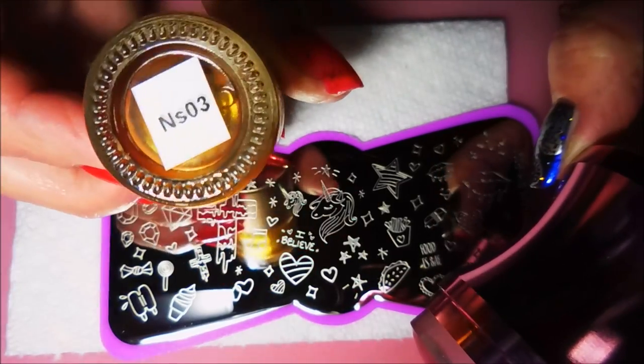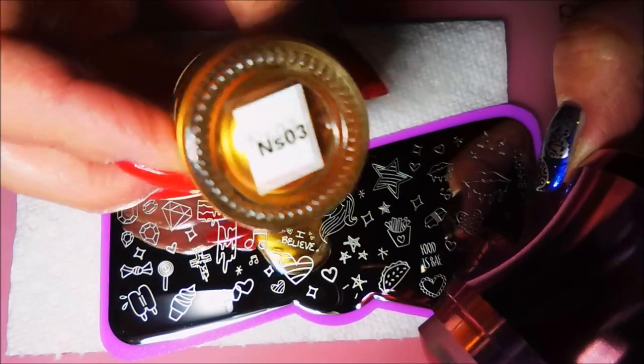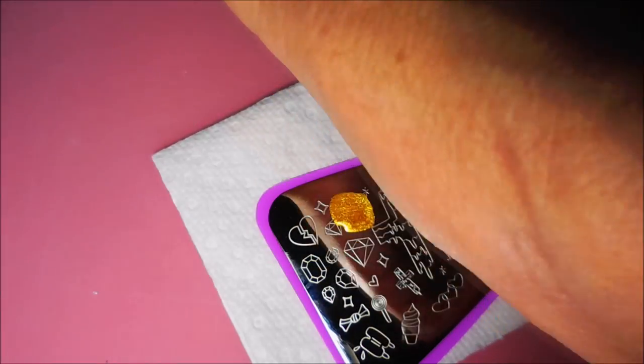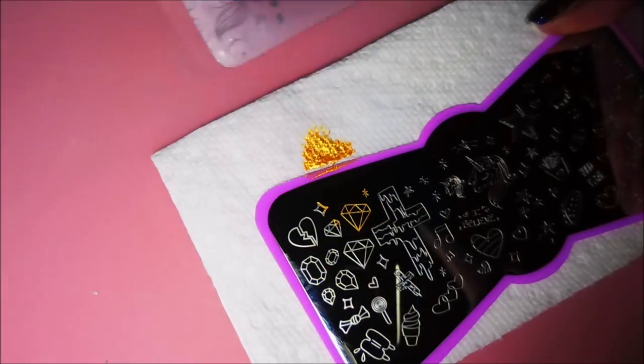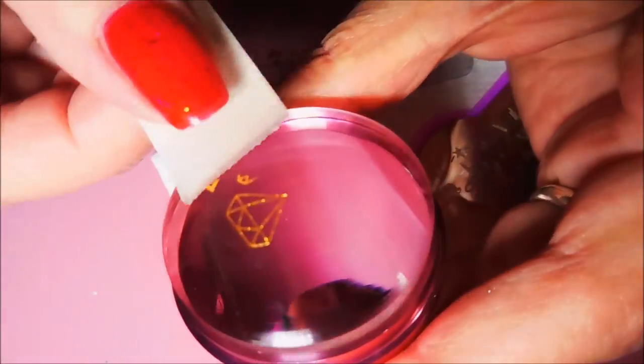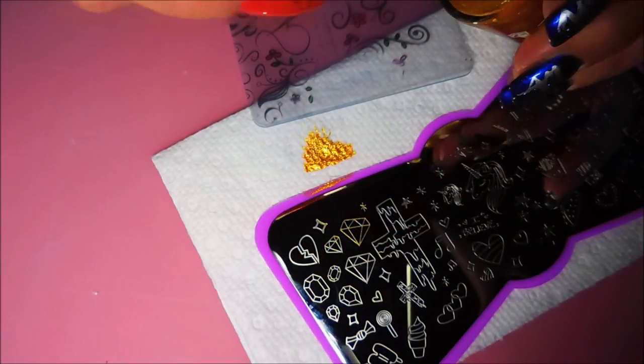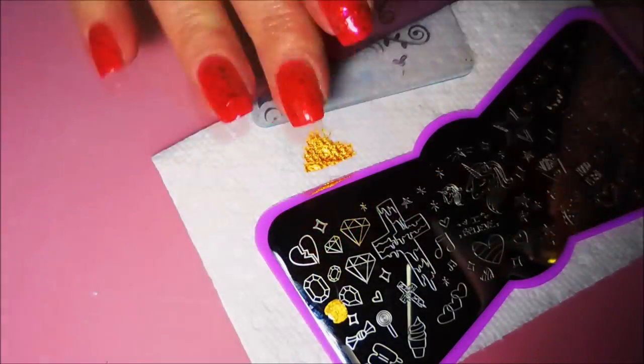And my Beauty Big Bang Stamper. And the Cold Diary NS03, which is their gold stamping polish. And I'll be using my clear Jolly Scraper today. And I'm just going to use all these images over here in this corner pretty much. And it's like the diamonds and gems and jewels. And I just really wanted to play with this plate. I didn't have an idea of a manicure I wanted to do. I just wanted to do some playing.